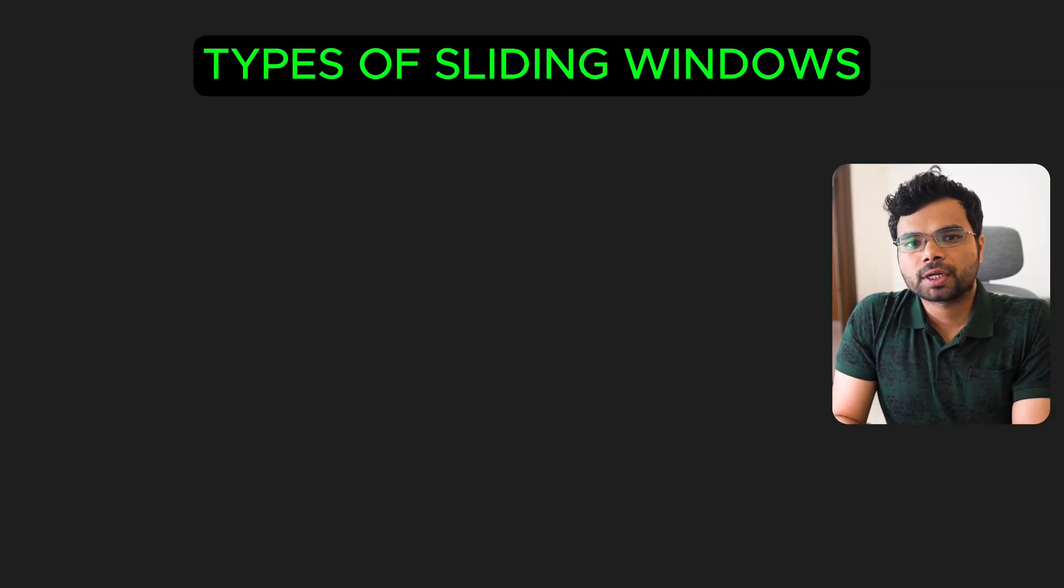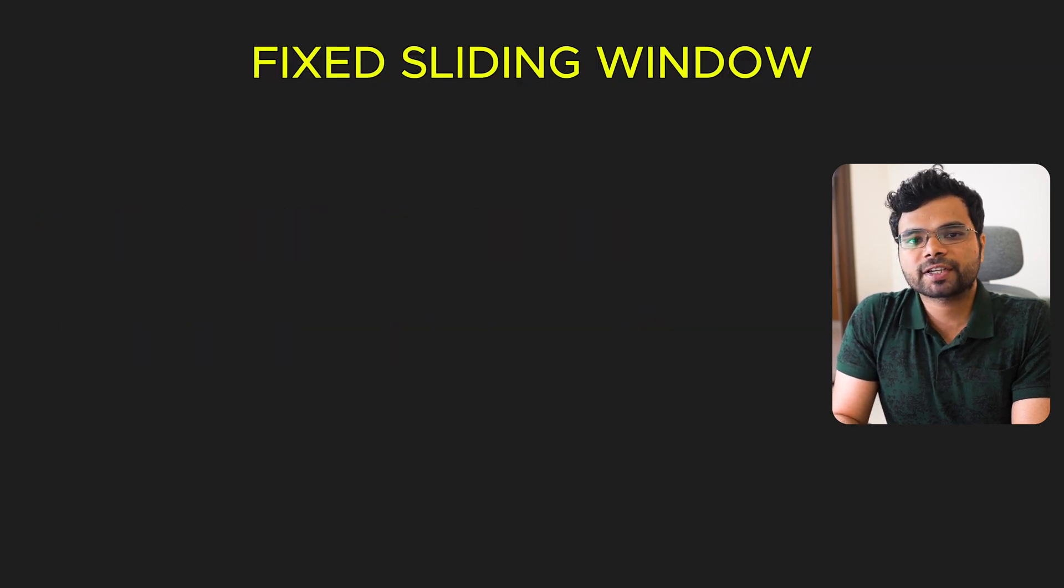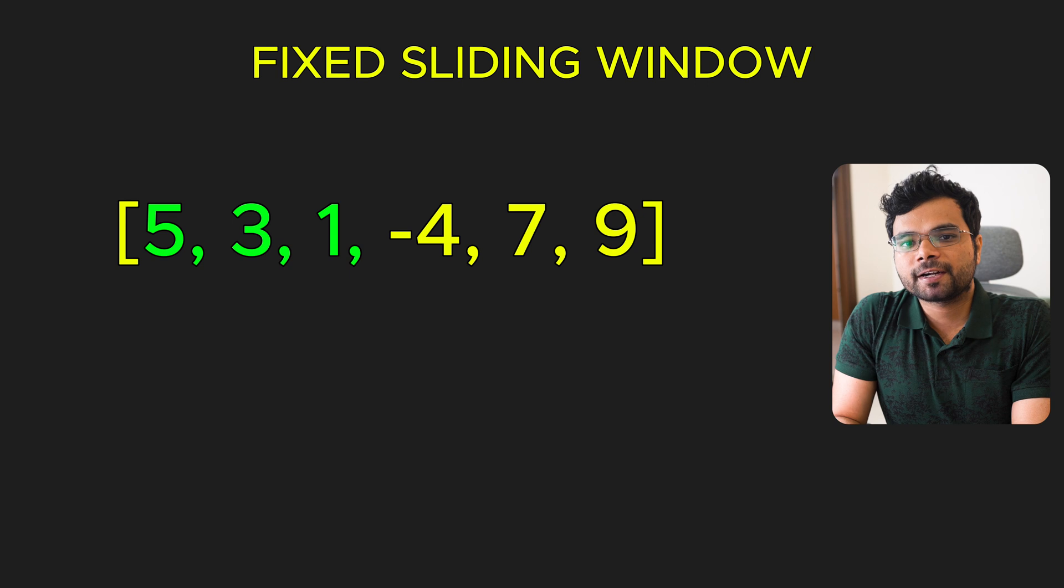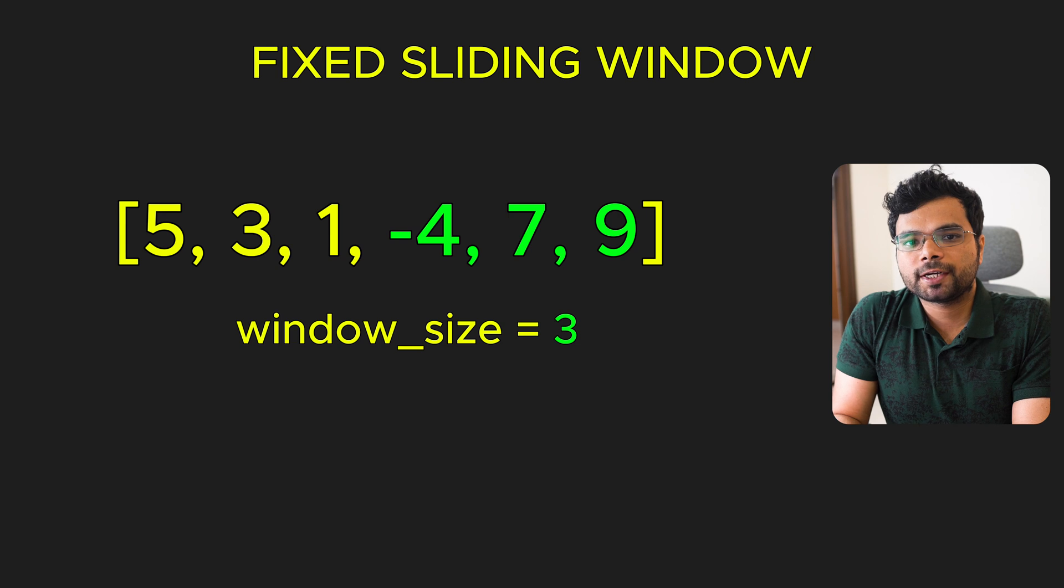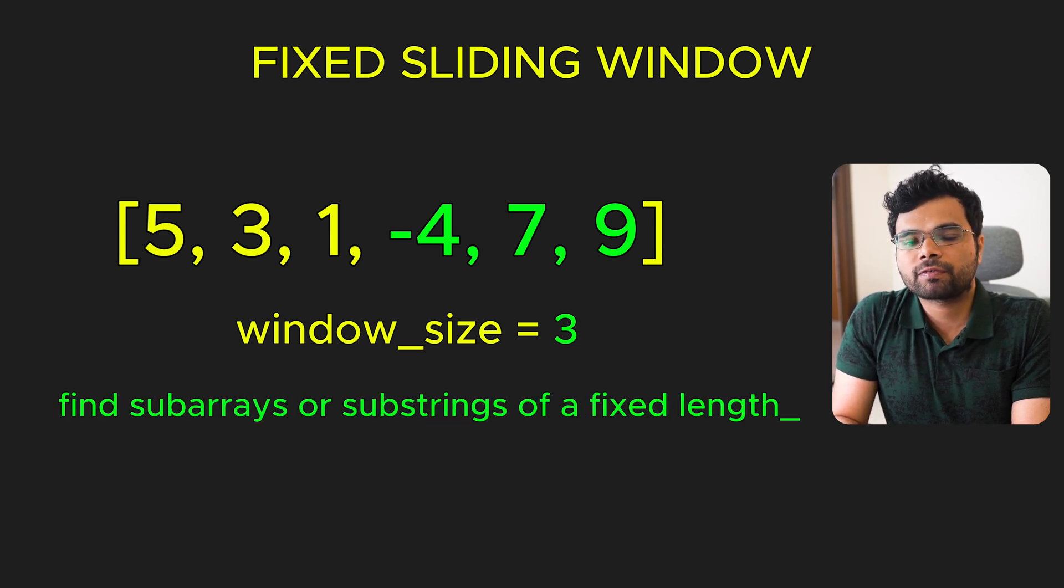Types of sliding windows: There are two main types of sliding windows, fixed sliding window and dynamic sliding window. The fixed sliding window maintains a constant length as it slides across the data structure. This is commonly used if the required window size is known in advance and the problem asks us to find sub-arrays or sub-strings of a fixed length.